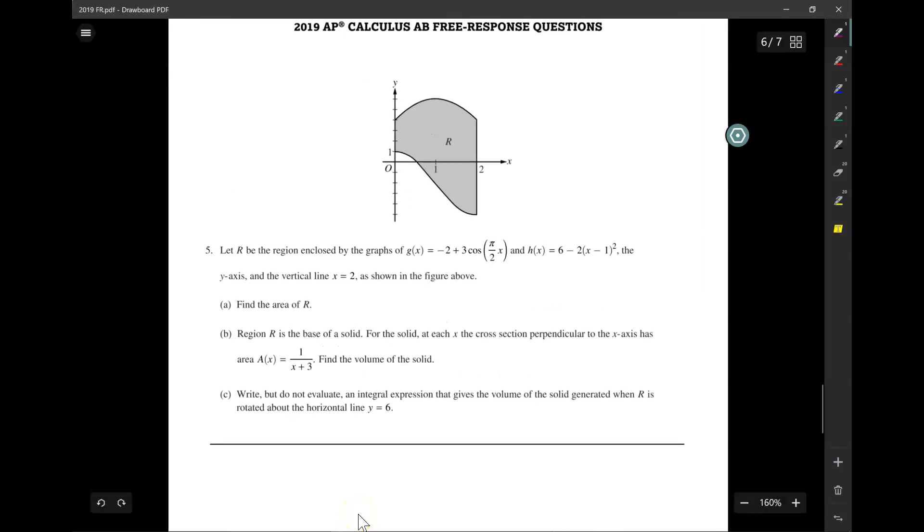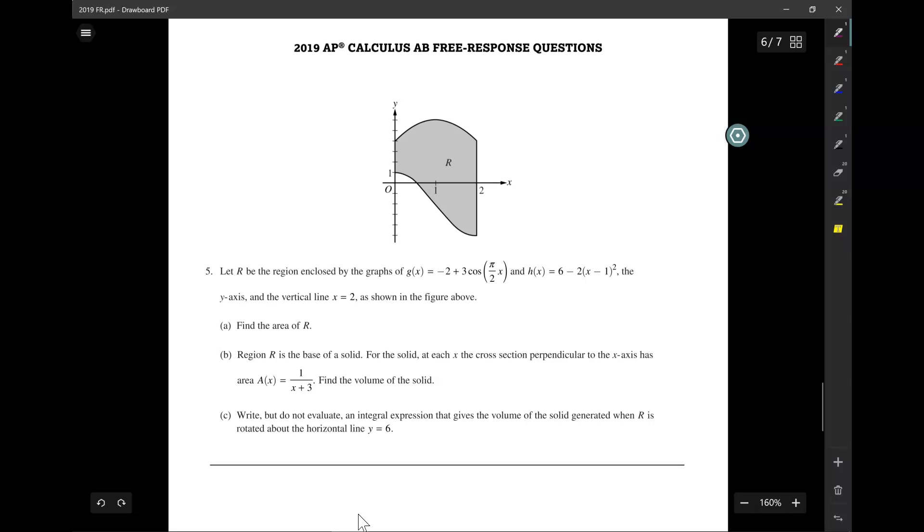Hi, this is 2019 number 5. Let R be the region enclosed by the graphs of g of x and h of x. The y-axis and the vertical line x equals 2 as shown in the figure above. Find the area of R.